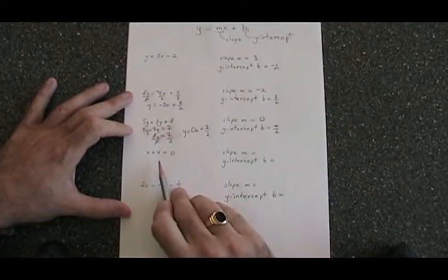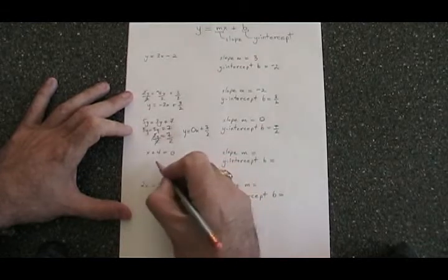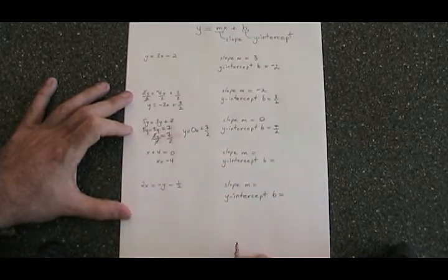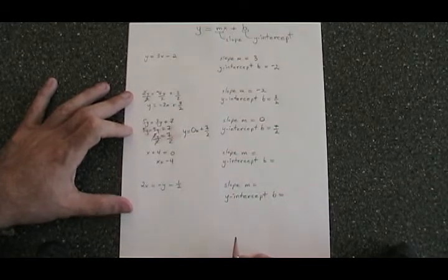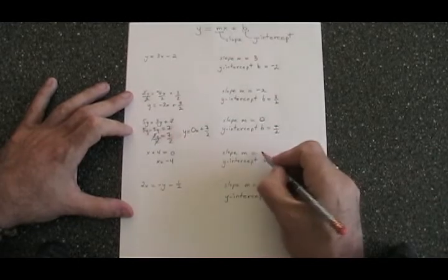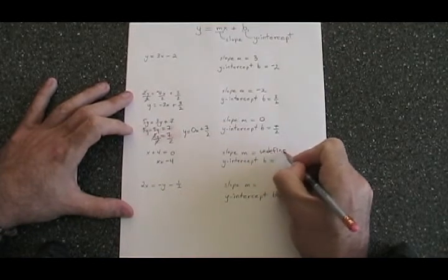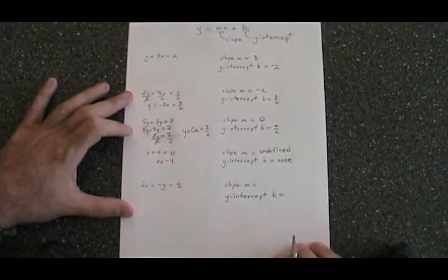In the fourth equation, it is impossible to isolate y because there is no y. The only thing I can do is move the 4 to the other side, x equals negative 4, and I have to know that any equation with x equals number has an undefined slope and has no y-intercept. It is a vertical line.